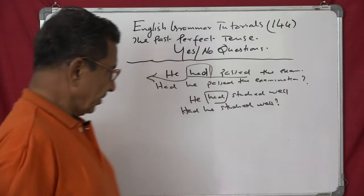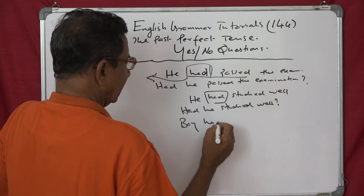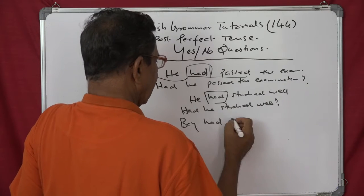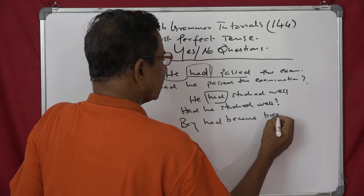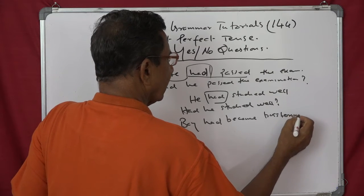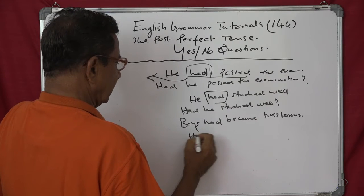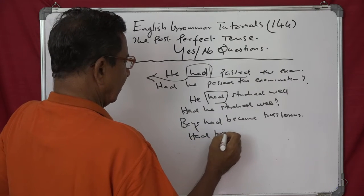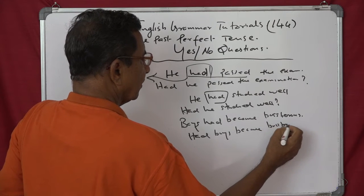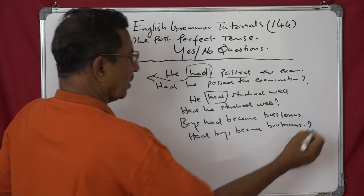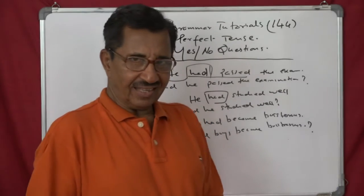Let us see some more. Boys had - they had become boisterous. Boisterous. Boisterous means noisy. So then you say, had boys, had boys become boisterous. So the question now: Had boys become boisterous. Like this.